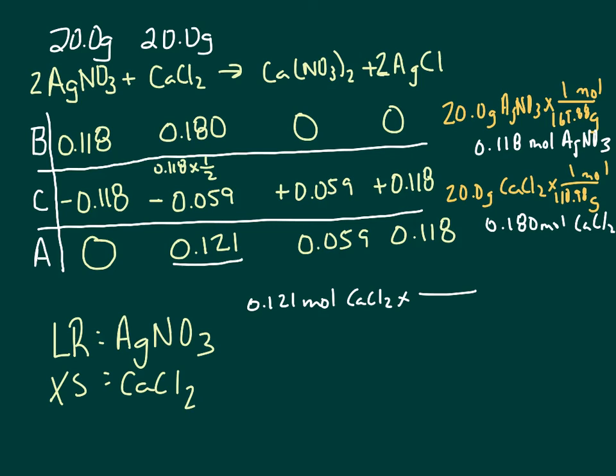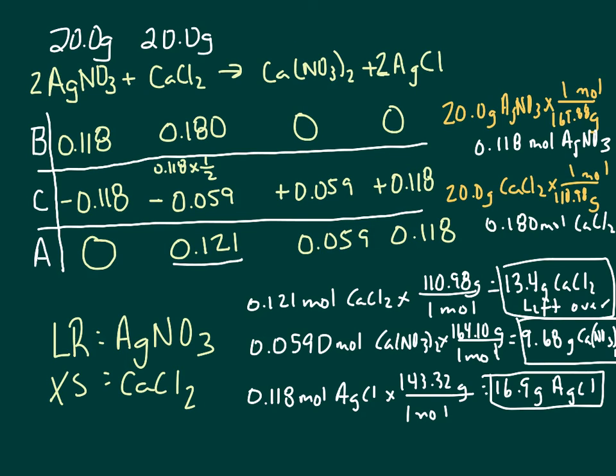And so then we put one mole on the bottom. It's 110.98 from the periodic table. Grams, and we get 13.4 grams of CaCl2 left over. So that's our excess. Then we can do that same thing for the calcium nitrate and the silver chloride, and change those over to grams.